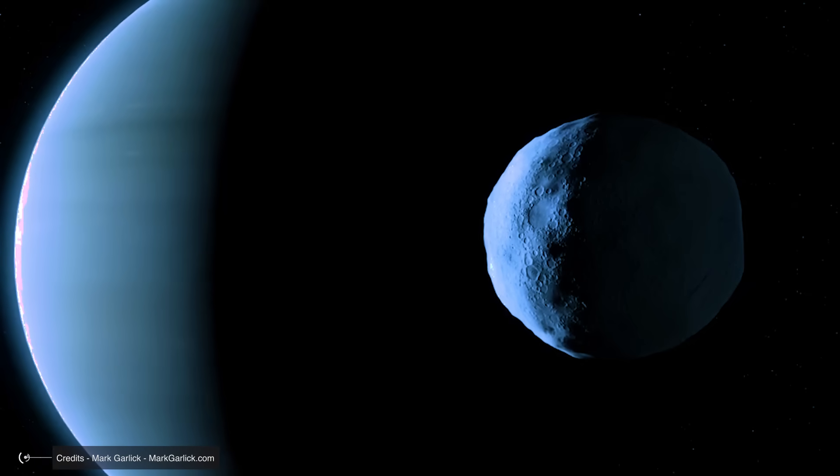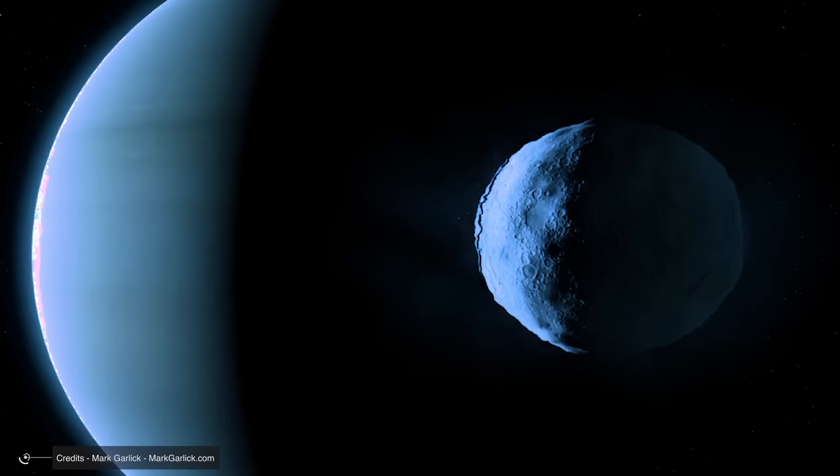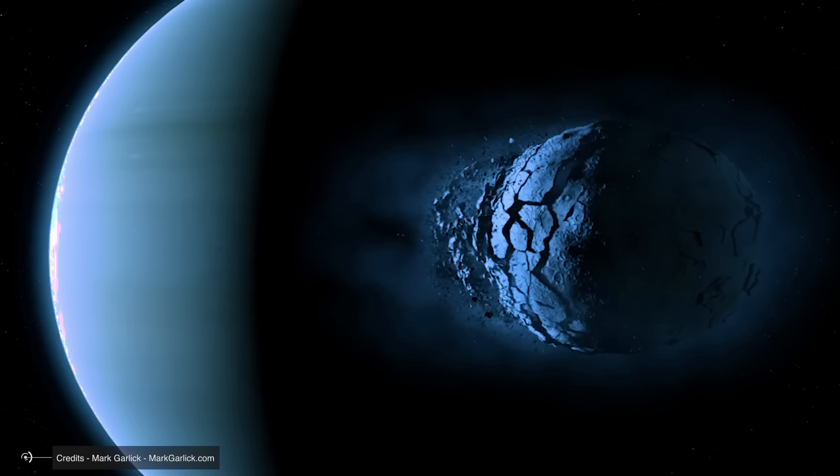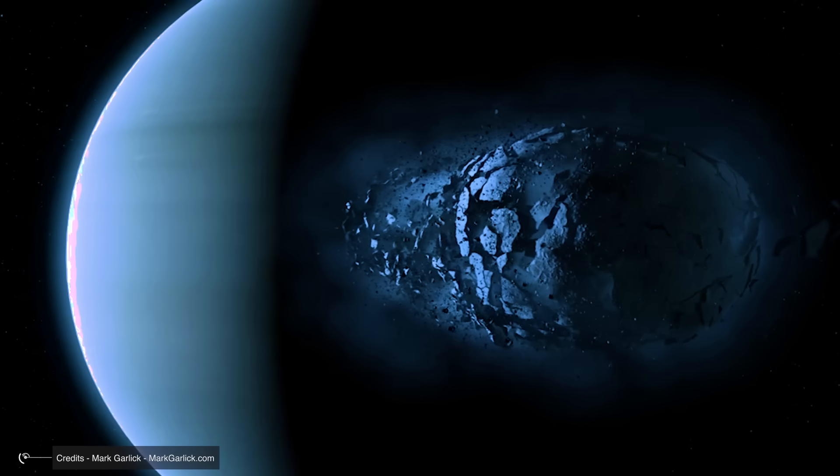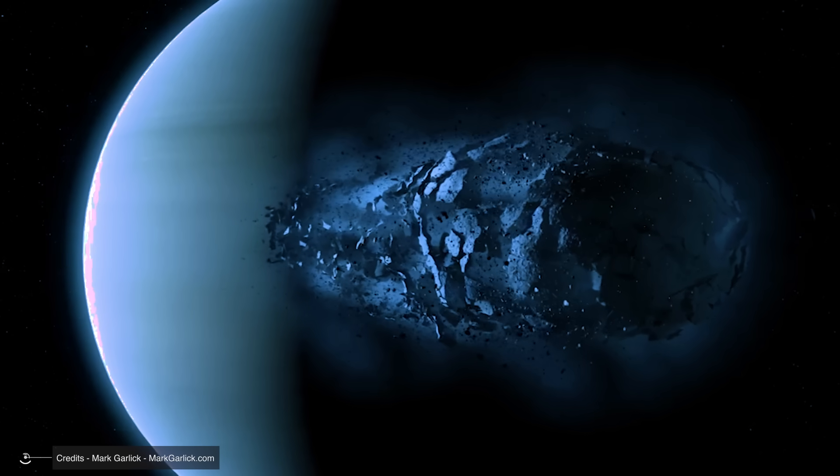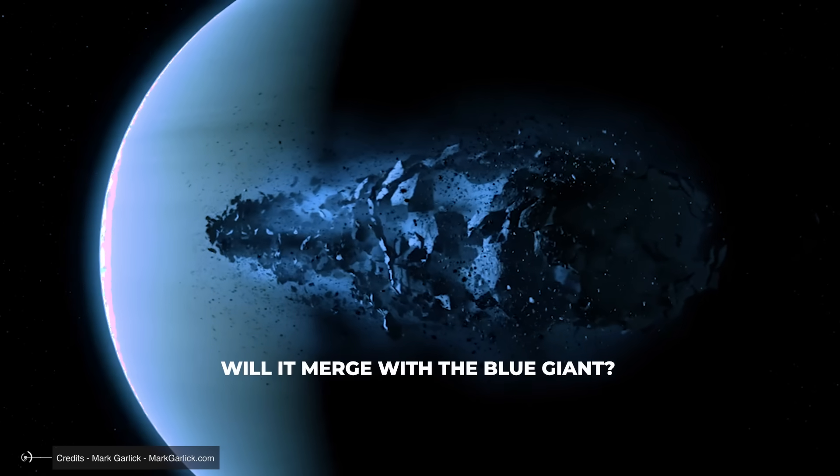If this happens, Despina will disintegrate into millions of pieces, creating a new ring system around Neptune, similar to Saturn's majestic ring. This unique destination highlights the dynamic and changing nature of our solar system. Will Despina be the beginning of a future ring show on Neptune, or will it merge with the Blue Giant?